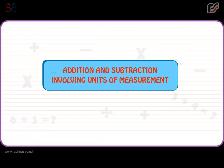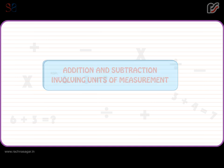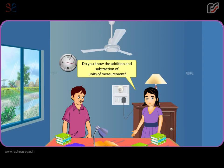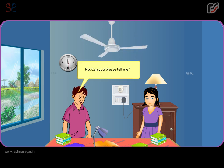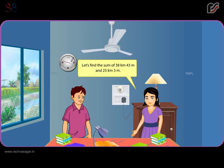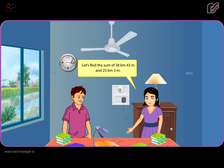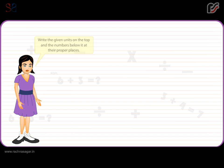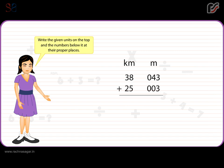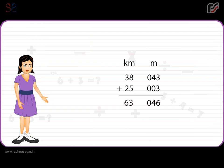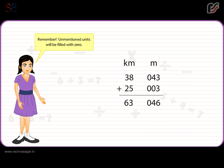Addition and subtraction involving units of measurement. Let's find the sum of 38 kilometers 43 meters and 25 kilometers 3 meters. Write the given units at the top and the numbers below at their proper places. Do the sum starting from the leftmost place. The total is 63 kilometers and 46 meters. Remember, unmentioned units will be filled with 0.